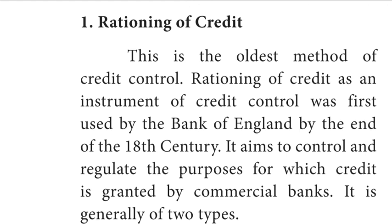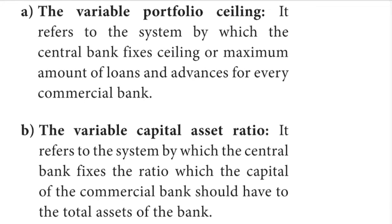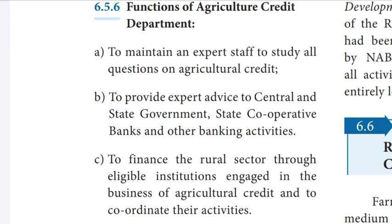Question number 13: What is rationing of credit? Rationing of credit is the oldest method of credit control, first used by the Bank of England at the end of the 18th century. It aims to control the purpose for which credit is granted by commercial banks. It is of two types: first, variable portfolio ceilings — the central bank fixes a ceiling on the maximum amount of loans for every commercial bank; second, variable capital-assets ratio — the central bank fixes the ratio of capital of a commercial bank to its total assets. Question number 14: The functions of the agricultural credit department include maintaining expert staff, providing expert advice to governments and cooperative banks, financing the rural sector through eligible institutions, and coordinating their activities.